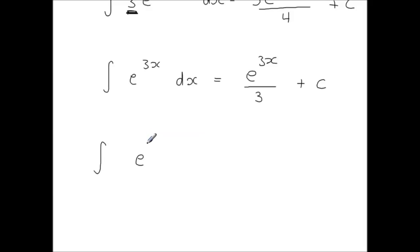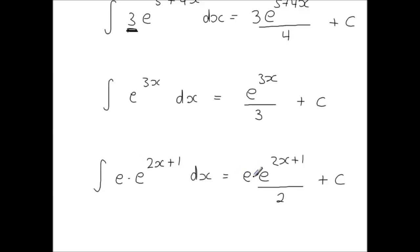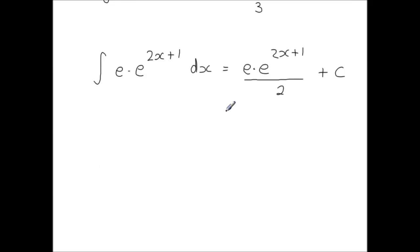Integrating e to the power of 2x plus 1, but let's say this has been multiplied by a constant — just as we had before — but the constant I'm going to use is e. E is just a number, just a constant. So you've got e to the power of 2x plus 1, divided by the coefficient of x, which is 2, plus the constant of integration, and we're multiplying by e here. If you want to simplify: e is e to the power of 1, times e to the power of 2x plus 1. Using rules of indices, add the powers: 1 plus 2x plus 1 gives 2x plus 2, divided by 2, plus the constant of integration.